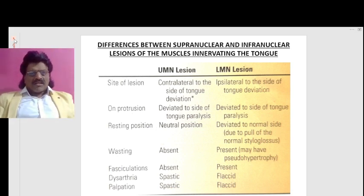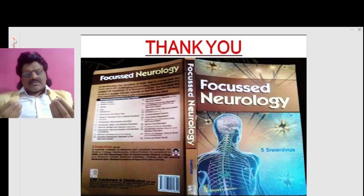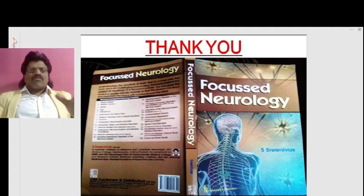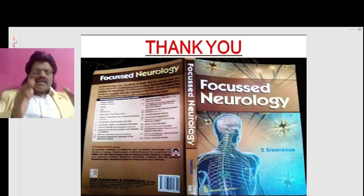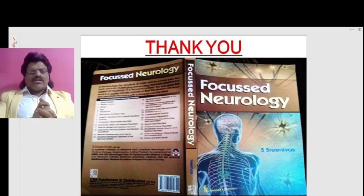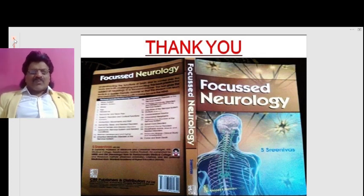These are the wonderful concepts of the differences between the supranuclear and infranuclear lesions of the muscles innervating the tongue. Other important concepts of neurology are available in question-and-answer format in the book Focused Neurology, written by me, Dr. Srinivas. This book is available online from all leading booksellers including Amazon. I hope you enjoyed these concepts — please like, share, and subscribe to my YouTube channel Dr. Srinivas Medical Concepts. Thank you, bye.